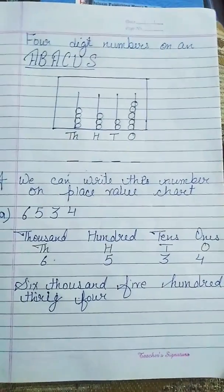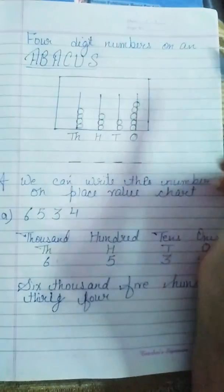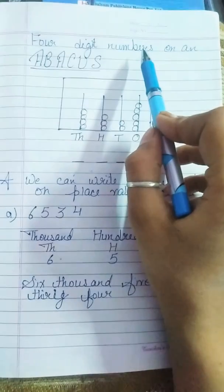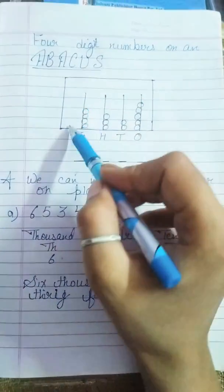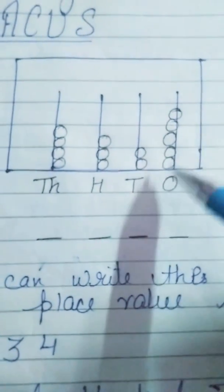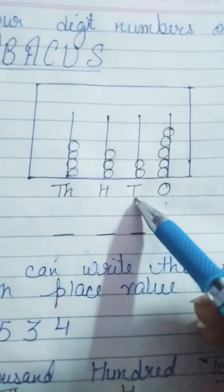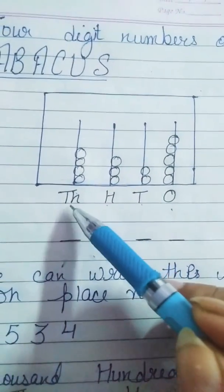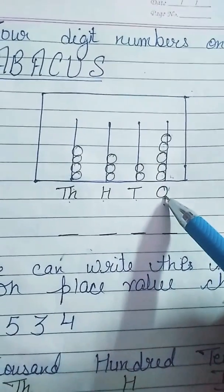Now we will learn abacus on 4-digit number. 4-digit number on an abacus. Now, aapko ye abacus dikha hai na? Look. There are ones, tens, hundreds and thousand. Look.